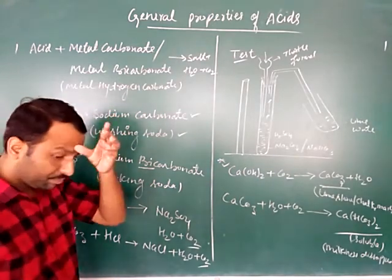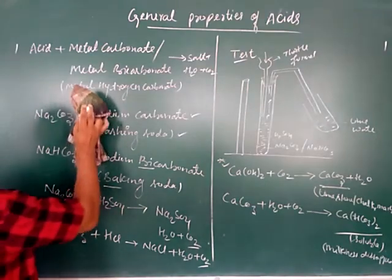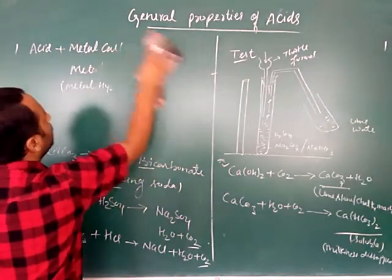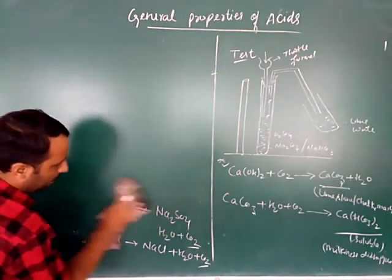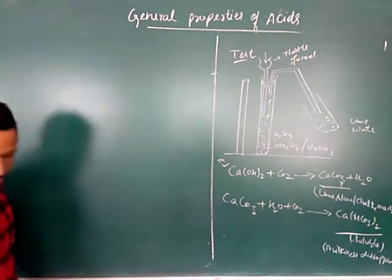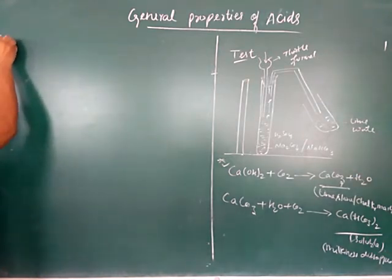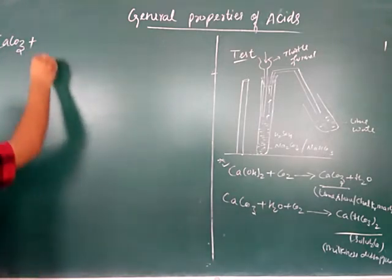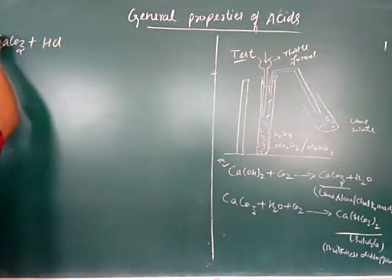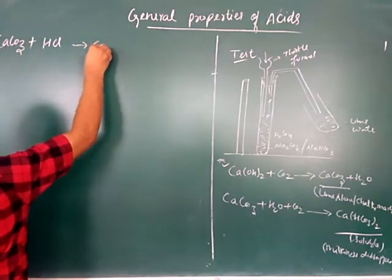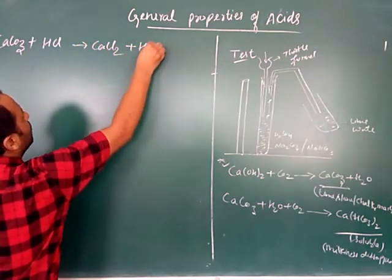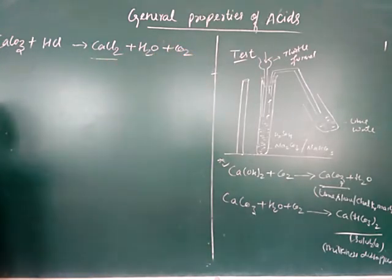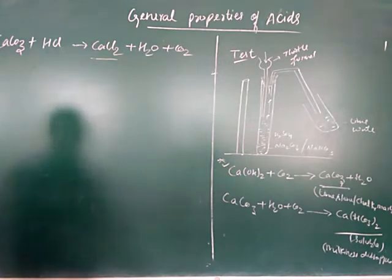Another exam question is about egg shells. Egg shells are made of calcium carbonate CaCO₃. If you mix egg shells with hydrochloric acid, it produces calcium chloride plus water plus carbon dioxide. The egg shells dissolve in the acid.